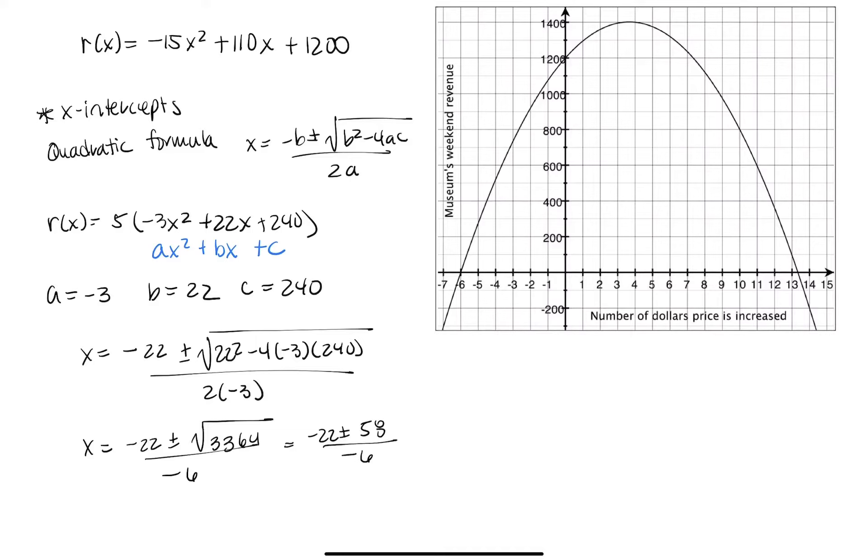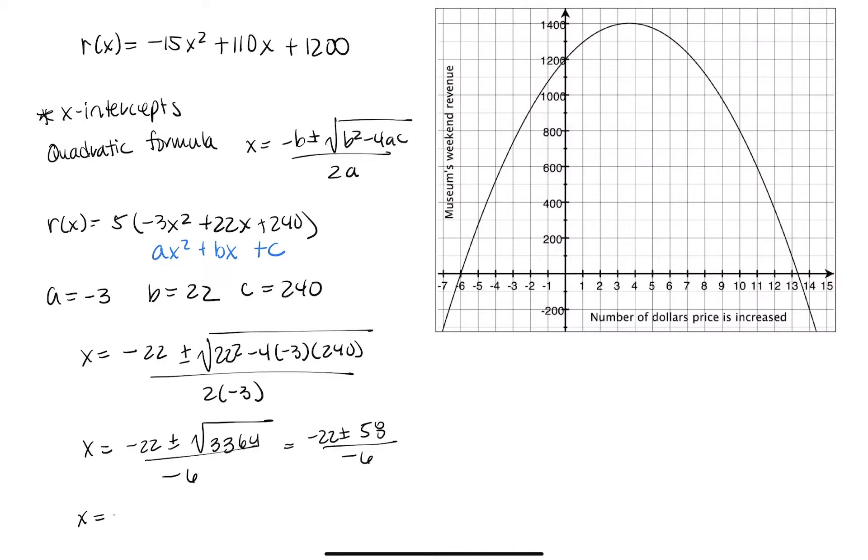Now, if you notice, we have this plus minus. That means we have two expressions here. We have x equals negative 22 plus 58 over negative 6, and x equals negative 22 minus 58 over negative 6. The first one works out to be 36 over negative 6, which is just negative 6.